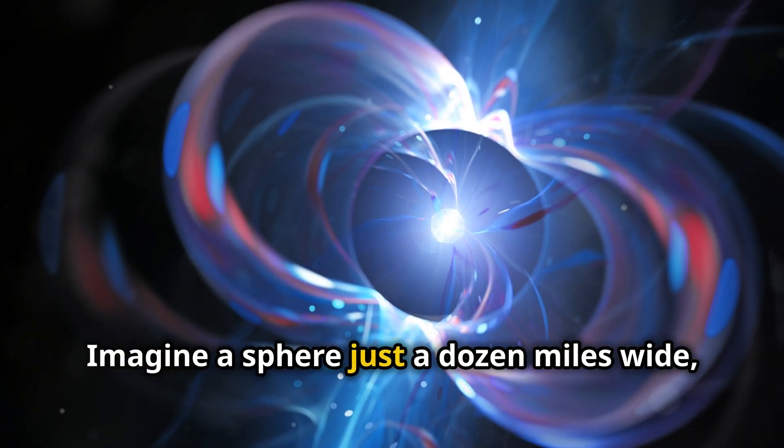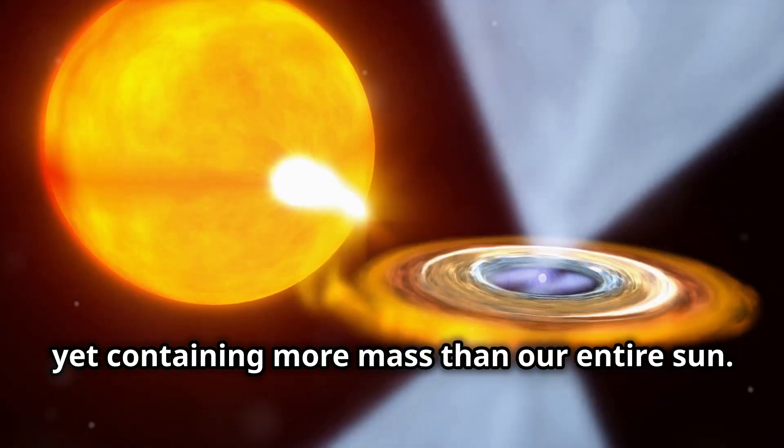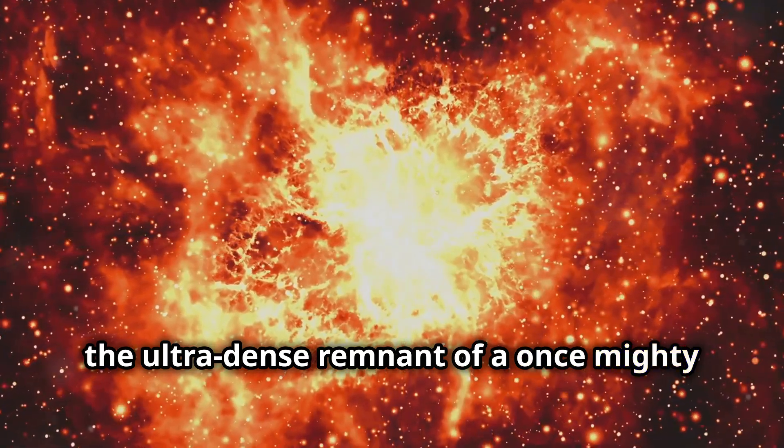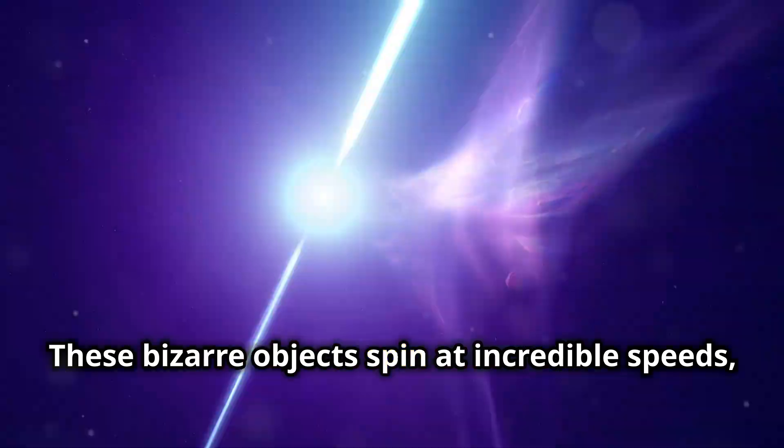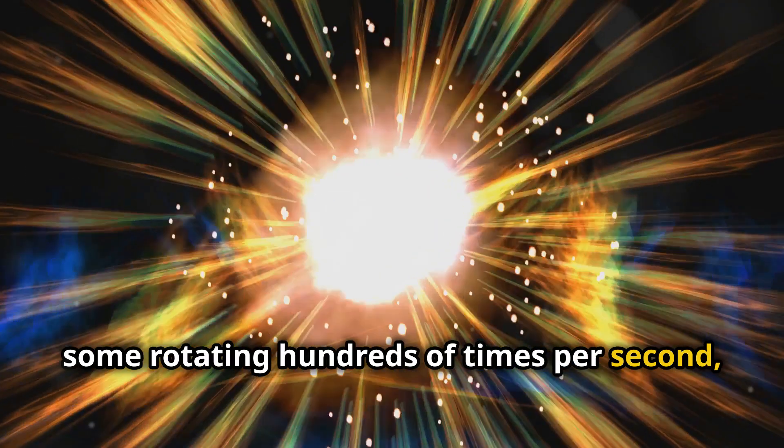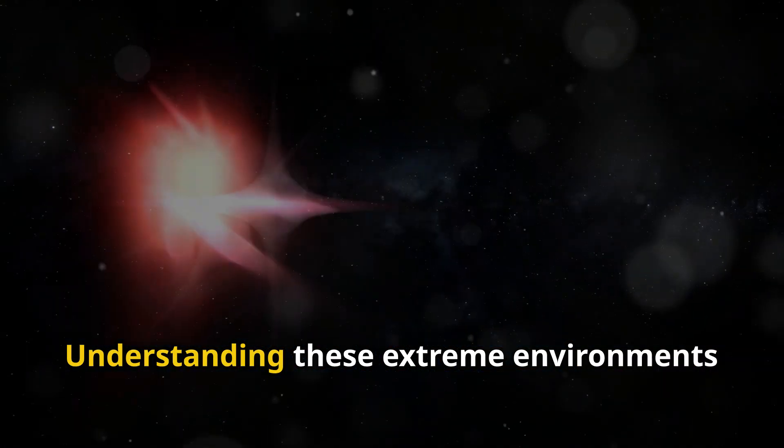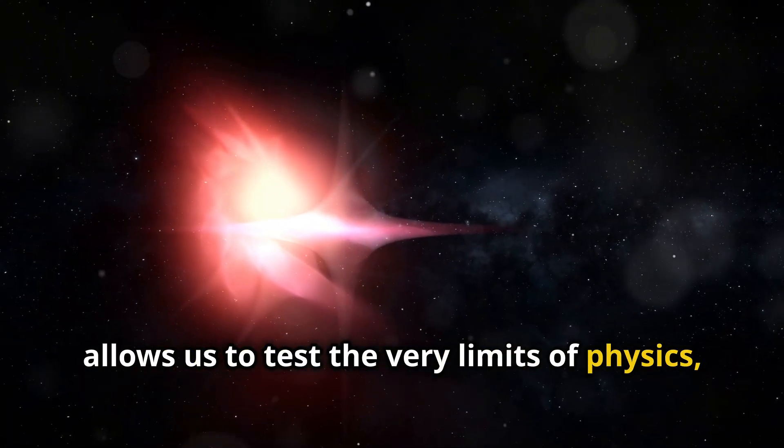Imagine a sphere just a dozen miles wide, yet containing more mass than our entire sun. That's a neutron star, the ultra-dense remnant of a once-mighty star's core collapse. These bizarre objects spin at incredible speeds, some rotating hundreds of times per second, beaming out radiation like cosmic lighthouses. Understanding these extreme environments allows us to test the very limits of physics, exploring matter under conditions we can't replicate here on Earth.